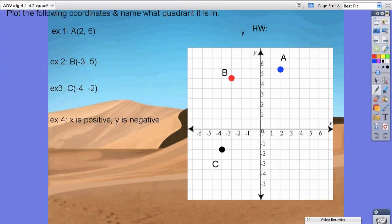Last part, it's an interesting question. It says x is positive and y is negative. So if x is positive, that means we should move to the right, so anywhere here. And it says y is negative, so that means we need to go down here. I'm just going to make up a point.